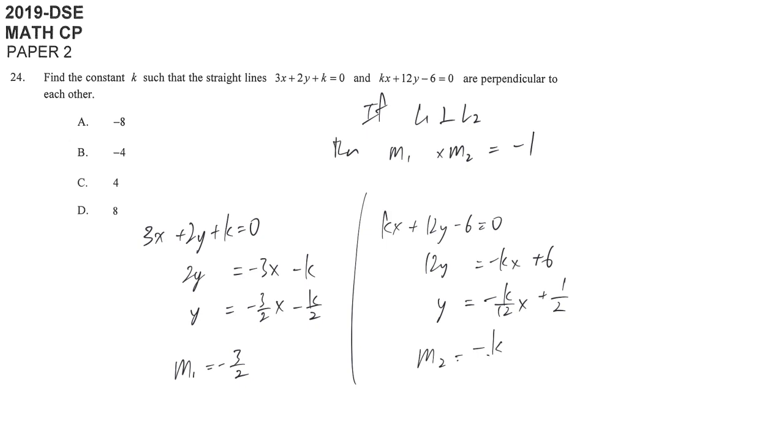M2 is equal to negative k over 12. The given condition is negative 3 over 2 times negative k over 12 is equal to negative 1.